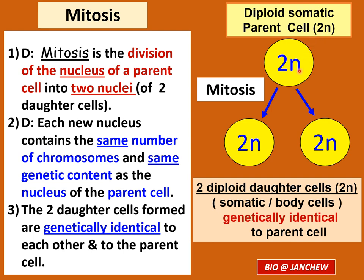This cell undergoes mitosis and produces two diploid daughter cells that are also somatic — normal body cells. These two cells furthermore have the same genetic content as the parent cell, so the genetic content is maintained through cell divisions in the body of the organism.